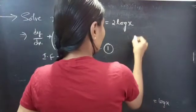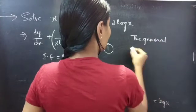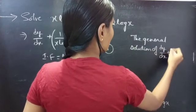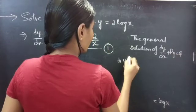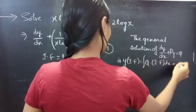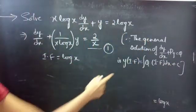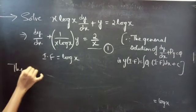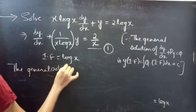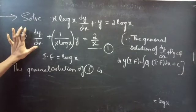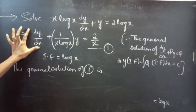We know that the general solution of a linear equation in y, that is dy/dx + p·y = q, is given by y · (integrating factor) = ∫ q · (integrating factor) dx + c. Now using this formula, we will find the general solution to equation 1, since this equation is in standard form of a linear equation in y.